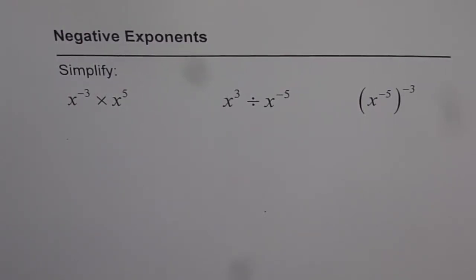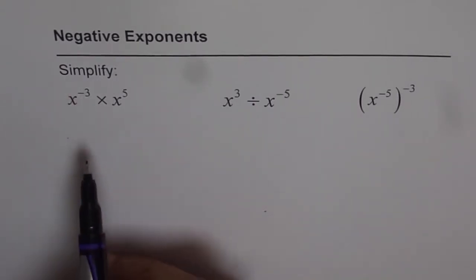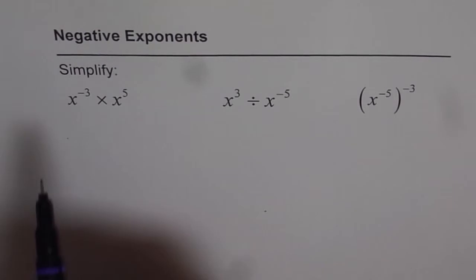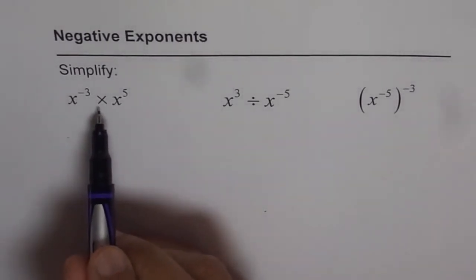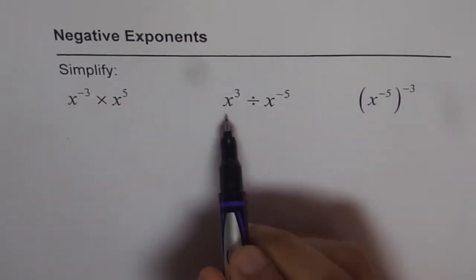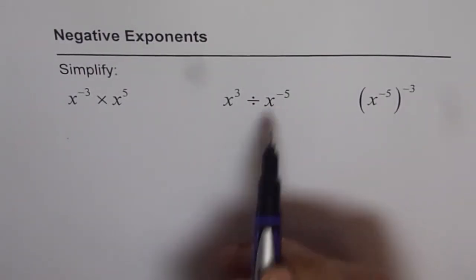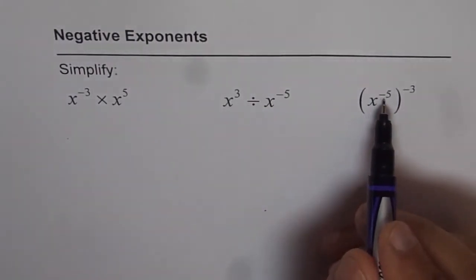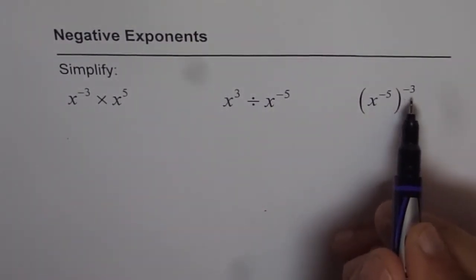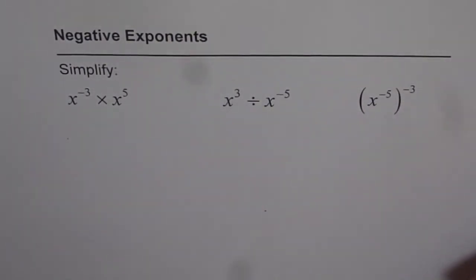Let us review the laws of exponents, and this time we are going to consider negative exponents. The question is to simplify, and we have three different problems here: x to the power of -3 times x to the power of 5; x to the power of 3 divided by x to the power of -5; and x to the power of -5 to the power of -3. I'd like you to pause the video, answer, and then look at my solution.